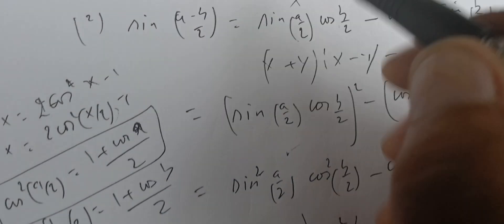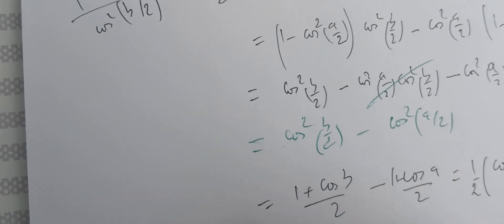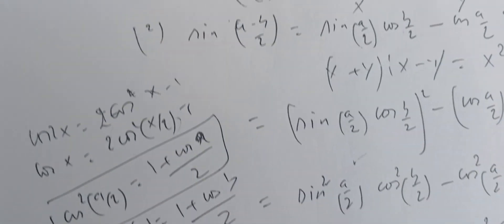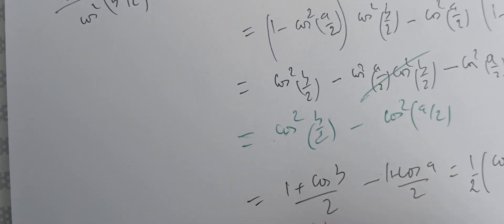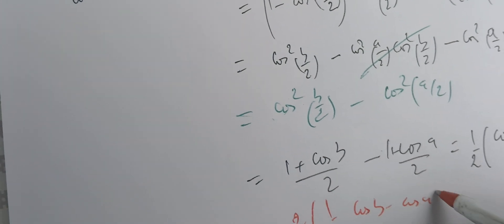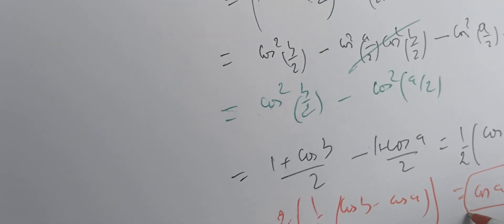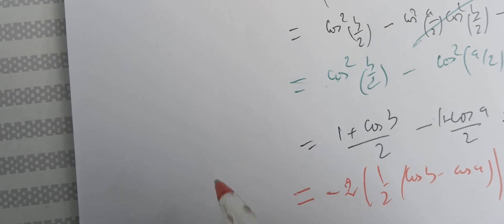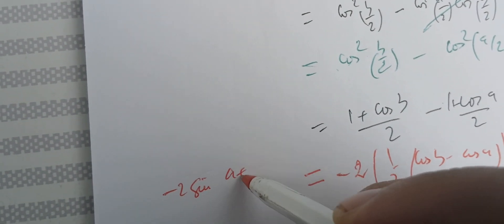Now we apply the minus 2 factor we set aside earlier. Multiplying minus 2 times (1/2)(cos(b) - cos(a)) gives us cos(a) minus cos(b), which completes the proof that the expression equals minus 2·sine((a+b)/2)·sine((a-b)/2).